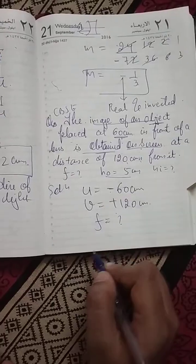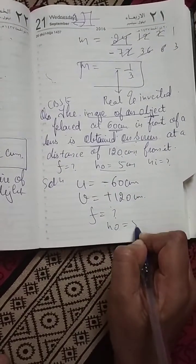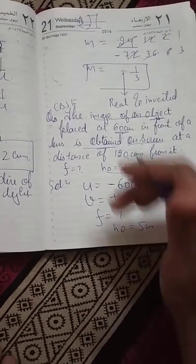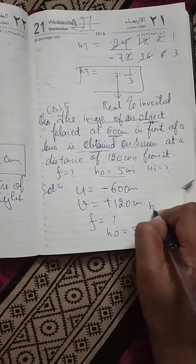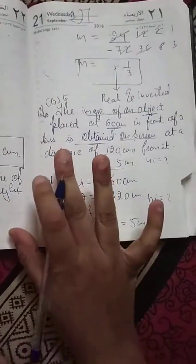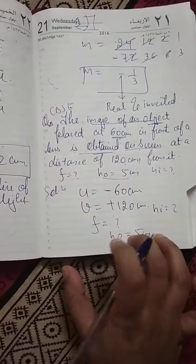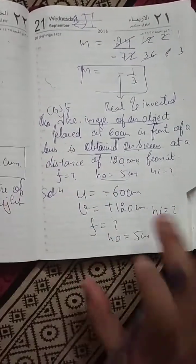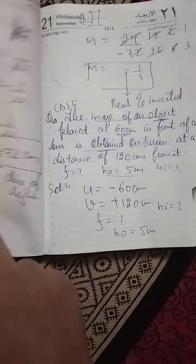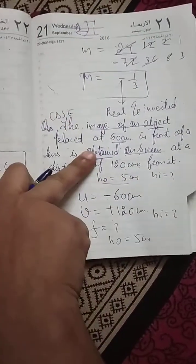Height of object they have given 5 cm, plus 5 because principal axis above. They wanted to know height of image. Height of image automatically will be negative. We will see at the end of the result because it is real and inverted. And focal length has to be positive because it is a convex lens and convex lens focal length is always positive.